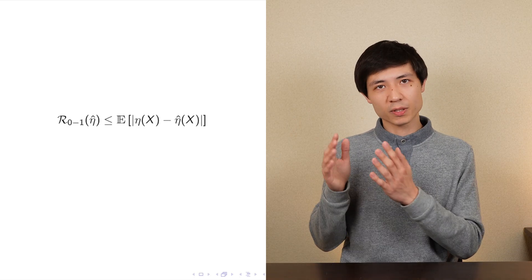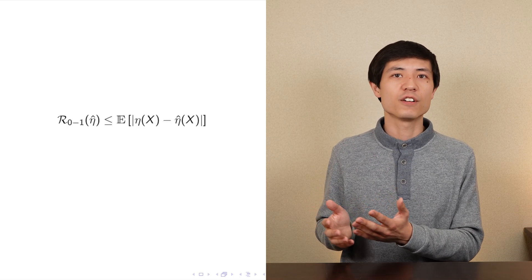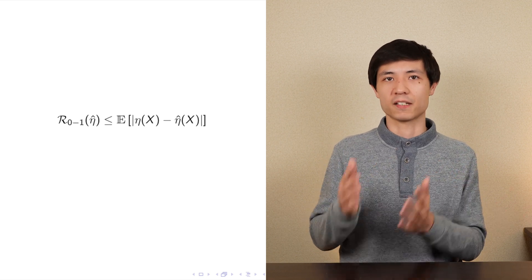Now, say that we obtain an estimate eta hat of a target function eta. How do we guarantee that its associated predictor has a small 0-1 risk? An existing result states that the 0-1 risk is smaller than a function of absolute value of eta minus eta hat. Therefore, it only remains to bound this term.